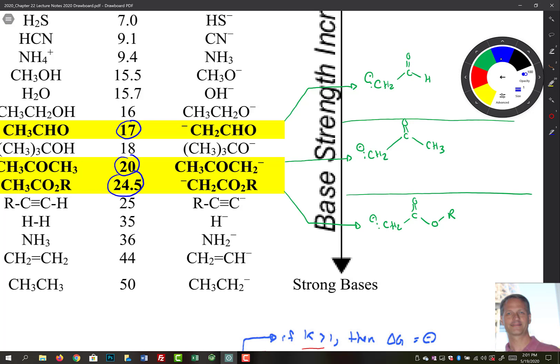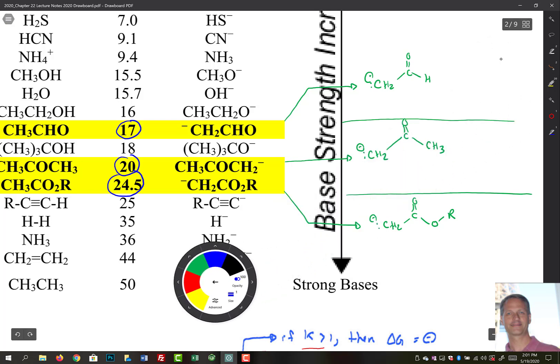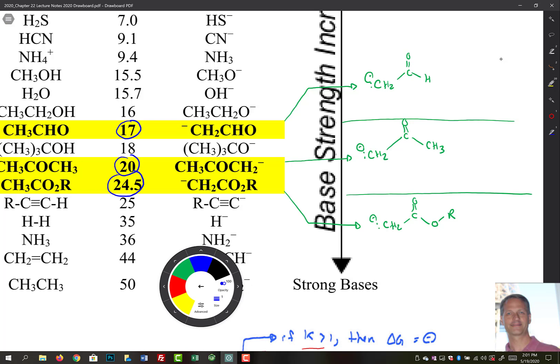Now remember that the stability of the conjugate base is what largely dictates whether or not we have a stronger or a weaker acid. So 17 means that we have a stronger acid than 25. So when we look at what's happening in this enolate over here, we just have one group over here on this side and that H right there, it does not really donate electron density to our carbonyl.